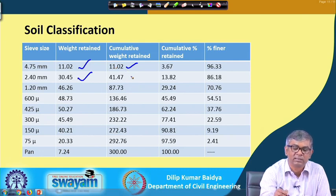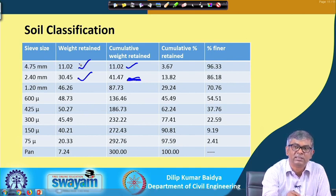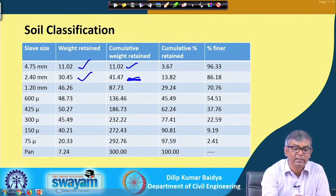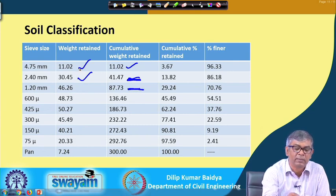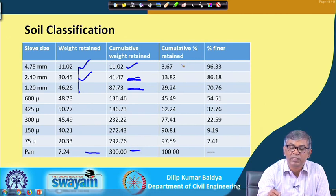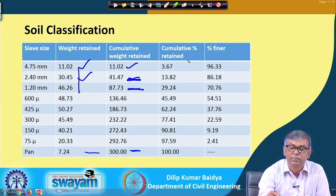At the top sieve, cumulative retained and retained are the same. When going to the next level, cumulative retained will be this plus the previous one. At the next level, cumulative retained will be the summation of those three, and so on. When you have cumulative weight retained, you then calculate cumulative percent retained.